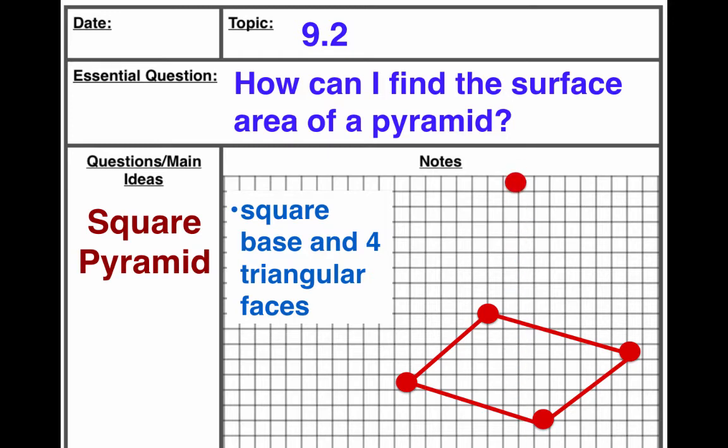This part is kind of important. I'm going to place a point right up above my rectangular base, and I'm going to take all my points and connect them to that top point like this. Now the back one I'm going to use a dotted line because it's technically behind the object. And there it is - there's my square pyramid.